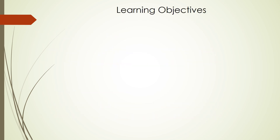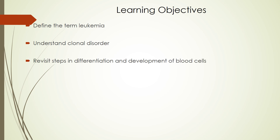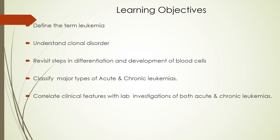The objectives describe what you will learn after finishing this lecture. You will be able to define leukemia properly and understand clonal disorders. You will revisit steps in differentiation and development of blood cells in the bone marrow, classify major types of acute and chronic leukemias, and correlate clinical features with lab investigations of both.